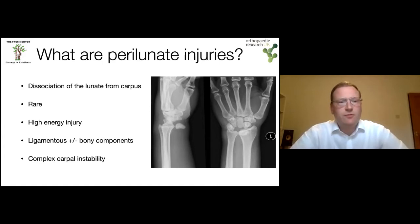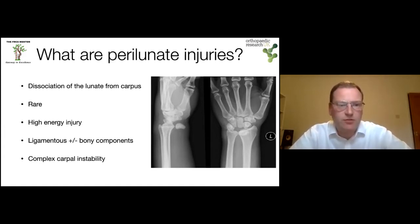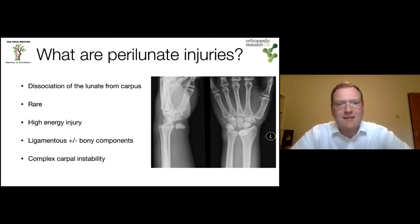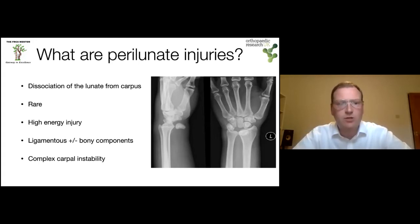Perilunate injuries are reasonably uncommon. They're invariably a high energy injury, and they have a combination of ligamentous and bony components — they are an example of complex carpal instability. I'm not going to go too much into carpal instability this evening because that in itself is an hour's presentation, but I will touch on it to explain perilunate injuries within that context.